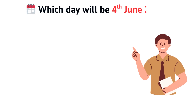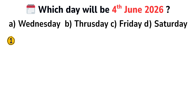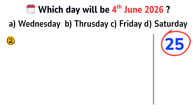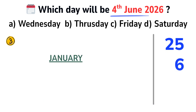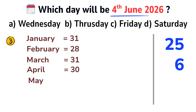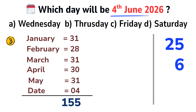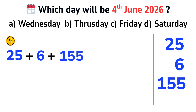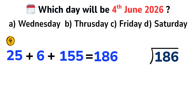Let's try one more. Which day will be 4th June 2026? For the year 2026, the last two digits are 26. Subtract 1: 26 minus 1 equals 25. Find leap years: 25 divided by 4 gives 6. Calculate total days from January to June 4th: January 31, February 28 (2026 is not a leap year), March 31, April 30, May 31, plus the date 4, equals 155 days. Add everything: 25 plus 6 plus 155 equals 186. Divide 186 by 7 — 7 times 26 equals 182, remainder 4.